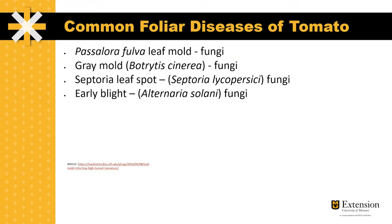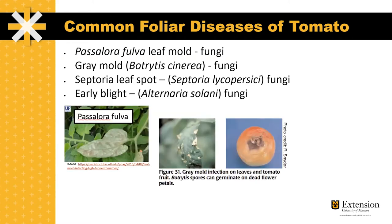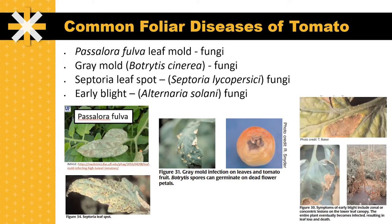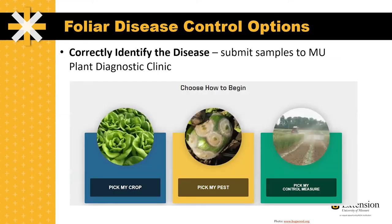The four most common foliar diseases of tomatoes in Missouri are Passalora fulva, gray mold, Septoria leaf spot, and early blight. These are all fungal pathogens. Although pictures can be very helpful in identifying what's going on, it's important to correctly identify the disease. The best way to do this is to submit samples to the MU Plant Diagnostic Clinic. For a nominal fee, you'll get a laboratory analysis to ensure that the pathogen you're targeting is in fact the one infecting your tomatoes. The Midwest Vegetable Production Guide can then help guide decisions in choosing a pesticide option for management of the fungal diseases.